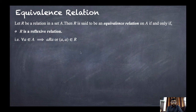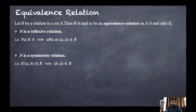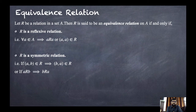The second condition: R is a symmetric relation. That means if (a, b) belongs to R, then (b, a) belongs to R. In short, if a is related to b, then b has to be related to a.